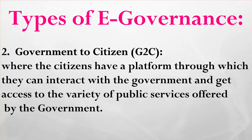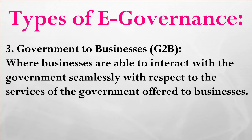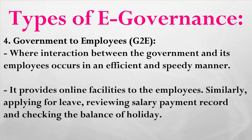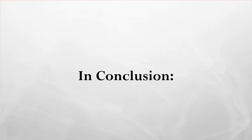Third, Government to Business (G2B): businesses are able to interact with the government seamlessly with respect to services the government offers to businesses. Fourth, Government to Employees (G2E): interaction between the government and its employees occurs in an efficient and speedy manner. It provides online facilities to employees such as applying for leave, reviewing salary payment records, and checking the balance of holidays, helping employees carry out their work smoothly while saving time and cost.